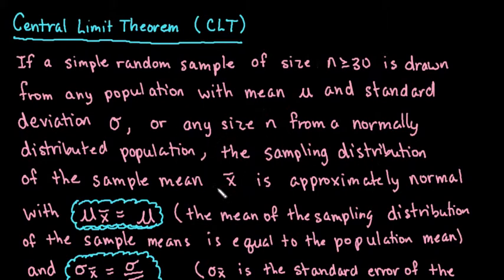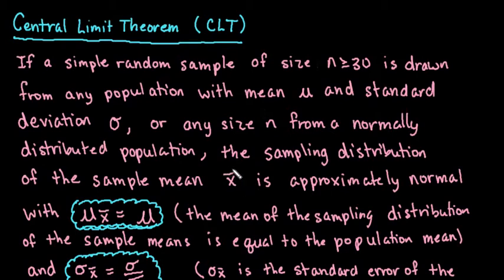The sampling distribution of the sample mean — so if I take samples of size 25 from a normally distributed population, find the average of each sample, and continue doing this infinitely — the distribution of those sample means is going to become approximately normal. The mean of the sampling distribution of the sample means, mu sub x-bar, is going to approach the mean of the population.